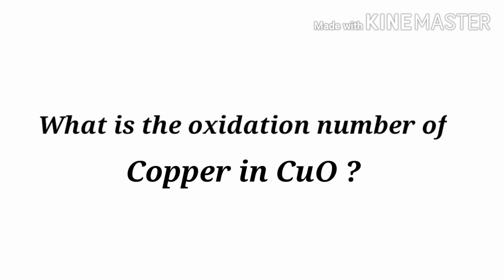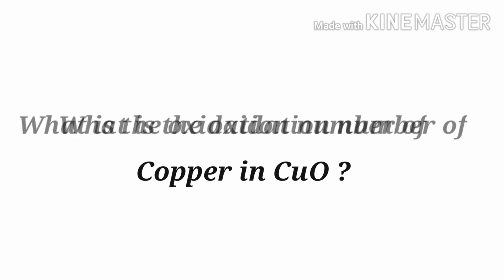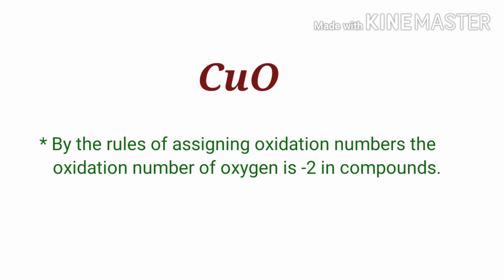What is the oxidation number of copper in cupric oxide? We can use the oxidation number rules to determine oxidation numbers. Cupric oxide is a neutral compound with overall oxidation number zero. Therefore, we know that the sum of the oxidation numbers of atoms is equal to zero. By the rules of assigning oxidation numbers, the oxidation number of oxygen is minus two in compounds.